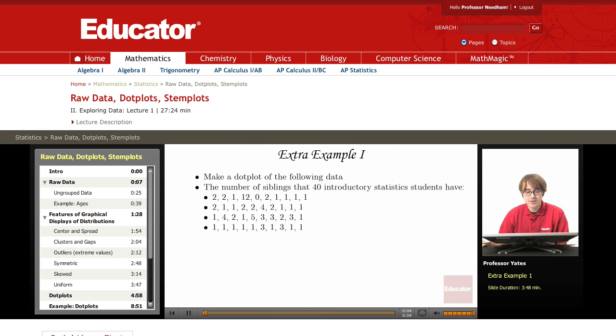We're now going to look at a couple extra examples here to make a dot plot and a stem plot. So for the first example, we want to make a dot plot for the following data. And these data come from the number of siblings that 40 introductory statistics students have.